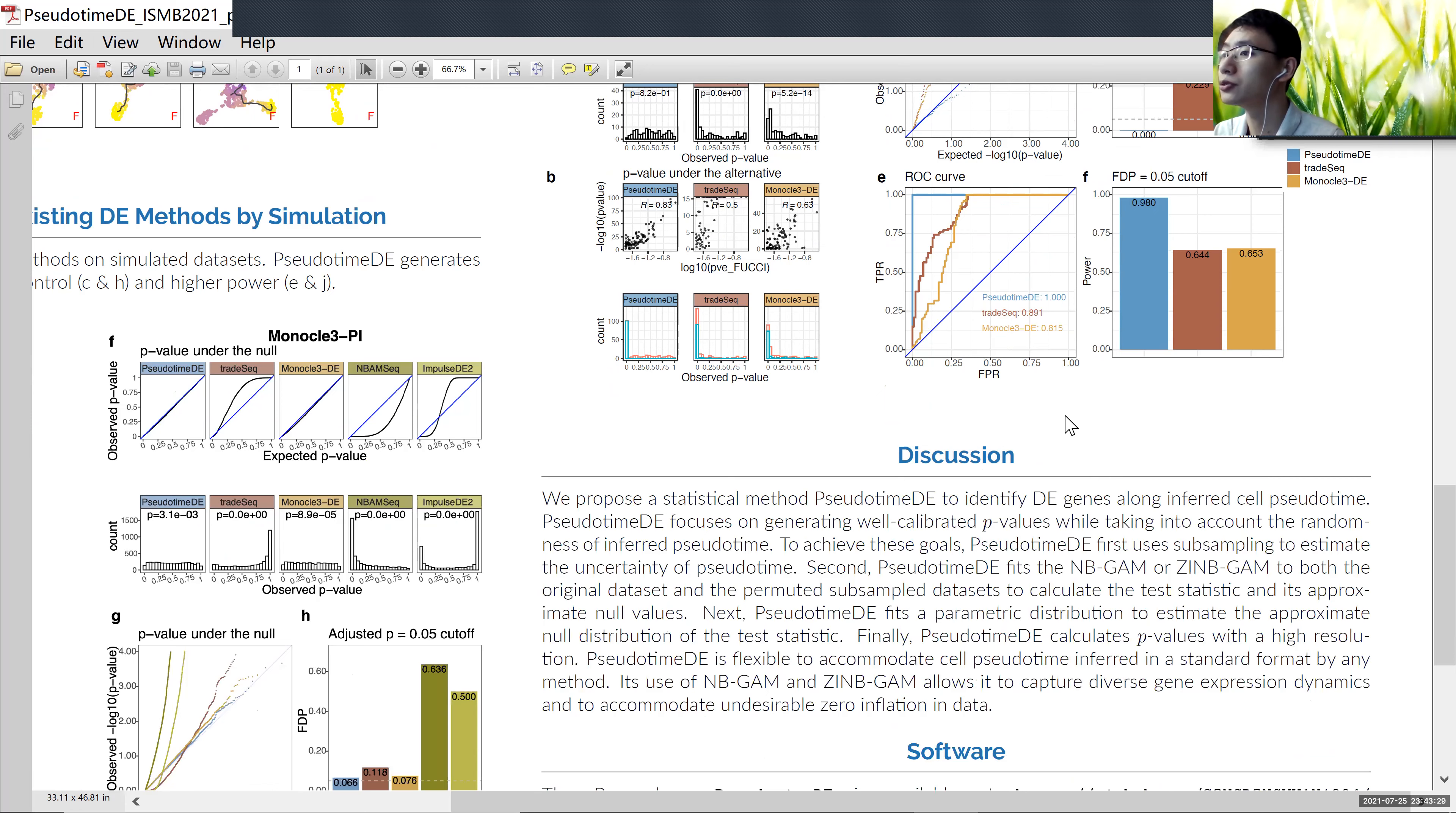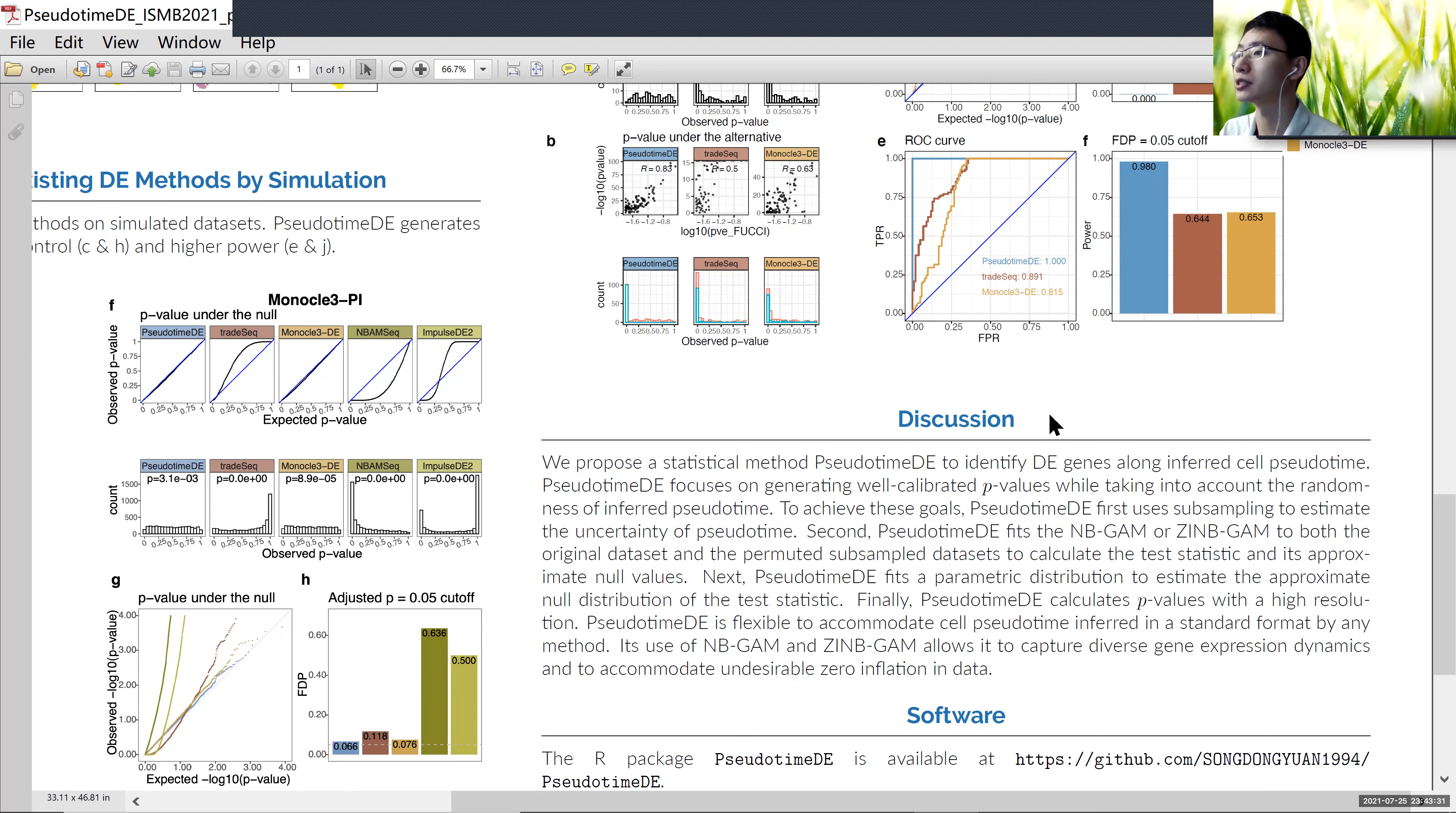In conclusion, we propose the statistical method PseudotimeDE to identify DE genes along inferred pseudotime. Our method focuses on well-calibrated p-values and tries to incorporate the uncertainty of the inferred pseudotime.